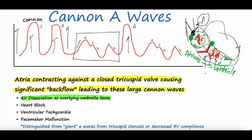But if you have AV dissociation, there's no communication between atria and ventricles — something's gone awry and they're just contracting at random times. Sometimes the atrium will contract against a closed tricuspid valve repeatedly, and then coincidentally contract at a time when the tricuspid valve opens, giving a normal CVP waveform — then again against a closed valve. This can be from complete heart block, or from ventricular tachycardia when the ventricle is contracting in an abnormal rhythm and the atrium is just contracting independently. If you have a pacemaker and it's not functioning, that can be a cause as well.